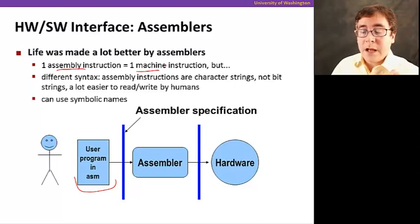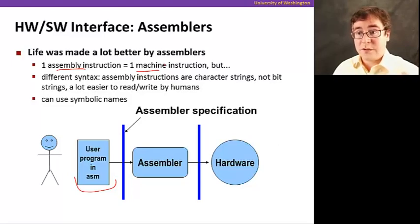But the big difference is that the assembly language is much easier for humans to read because they have character strings as opposed to just bits. So humans can understand much, much easier, so it's much easier to read and write.